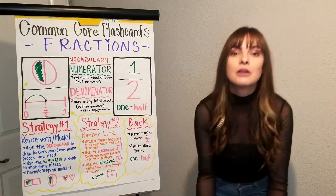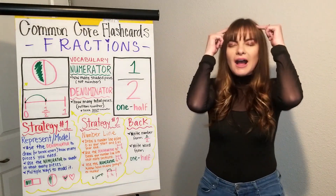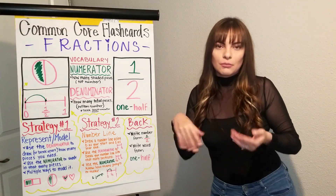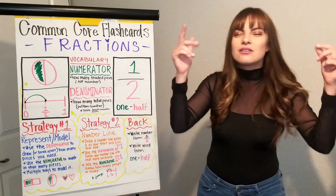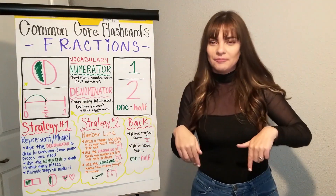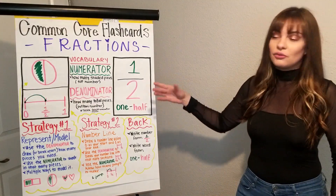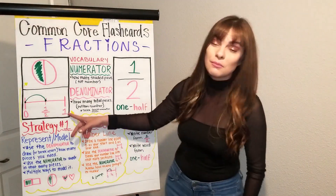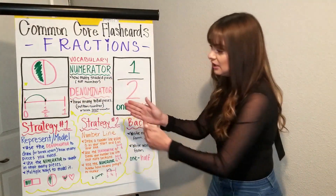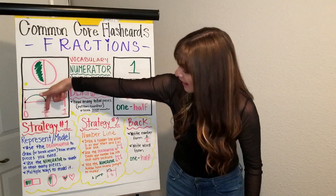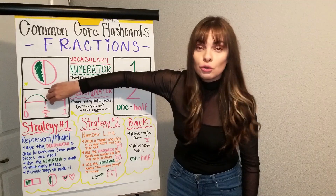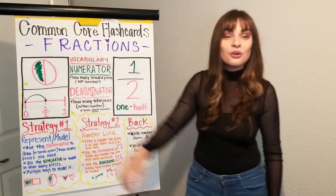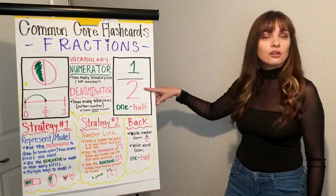We have our denominator, which means the number on the bottom. How I always remember denominator is I think of denominator down — the number that's down. Down-nominator. Just think of D is down, that's the number on the bottom. So our denominator in this case is two for half. It tells us how many total pieces we have, or if it was a number line, how many equal sections you need. In this number line, we broke it in half, which gives us two sections. Up here in the circle, we have two sides. That's what our denominator is telling us.